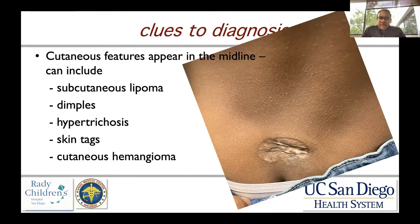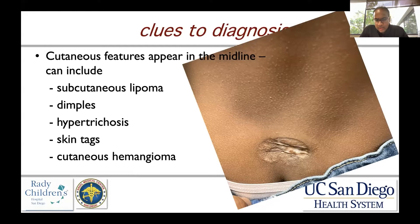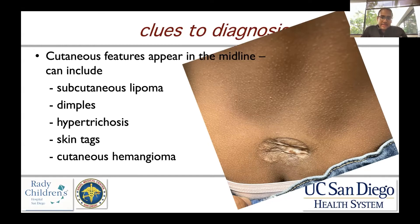This is an example of a young girl who has what appears to be a cigarette-type burn in her lumbosacral area. Upon further evaluation, this was actually a meningocele manqué, or atretic meningocele, that had involuted — but there was an abnormal connection. She presented with signs and symptoms of tethered spinal cord.